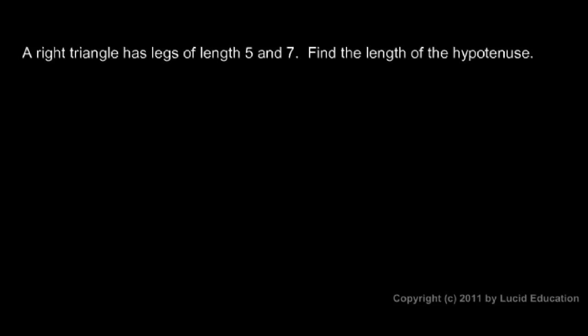Here's another example. In this one, the numbers don't work out to nice, neat, round integers. That's okay. The Pythagorean theorem still applies. Here we're told that a right triangle has legs of length five and seven.